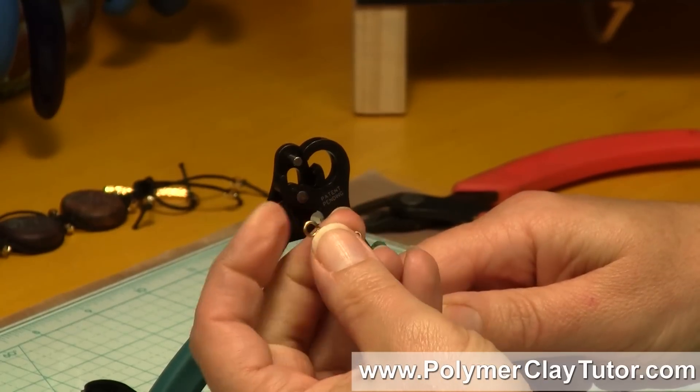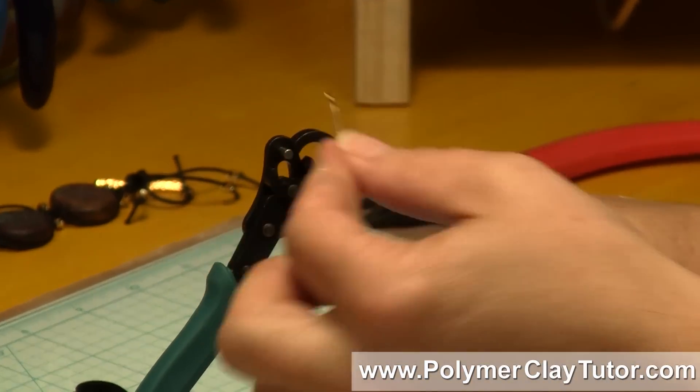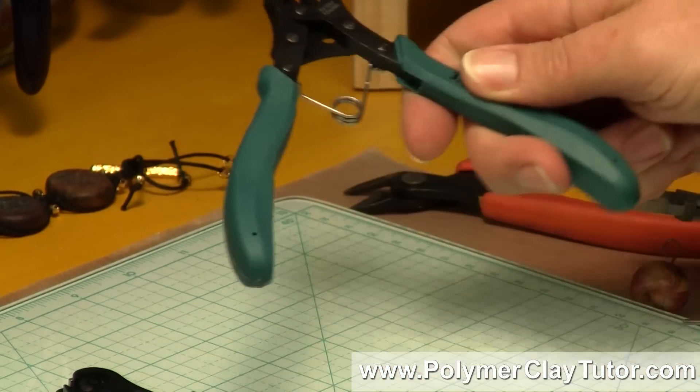And the small one is good for things like the end of an earring and that kind of thing, but it's very, very easy to use.